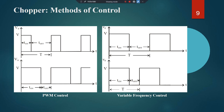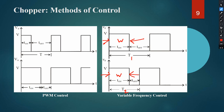In the variable frequency control waveform, the time period changes — for example from T1 to T2 (where T2 < T1) — but the on-time width W remains the same. Since T2 = 1/F2 and T1 = 1/F1, here F2 > F1, meaning the frequency has been increased.